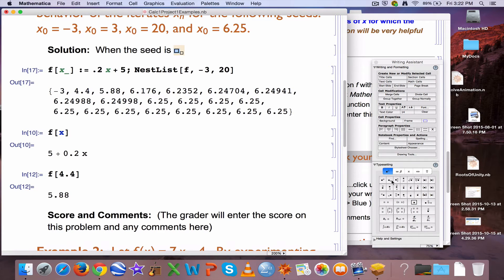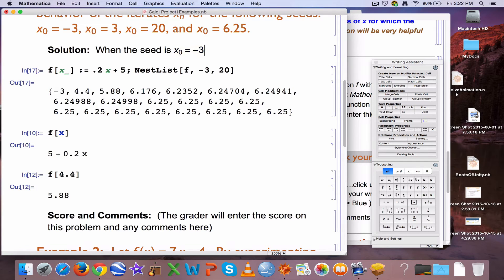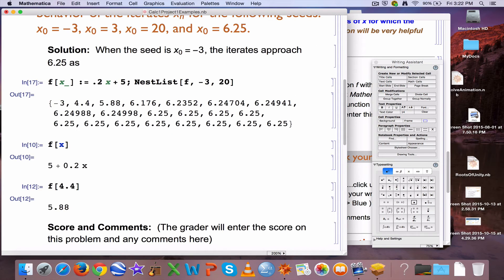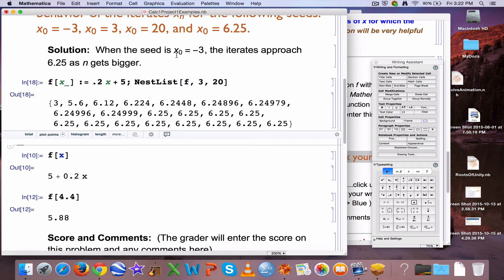x sub 0 equals negative 3. Basically, the iterates approach 6.25 as n gets bigger. Or, you could say, as n goes to infinity. What about some other seed, like positive 3? See what happens here. Look, same thing. Okay? The iterates are still approaching 6.25.